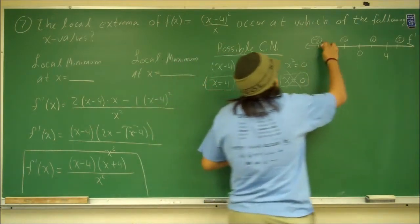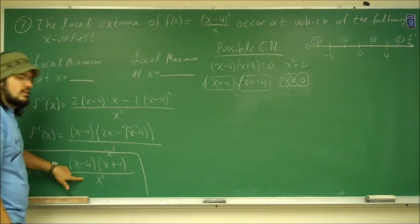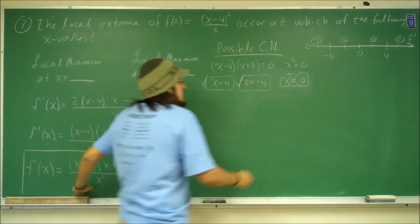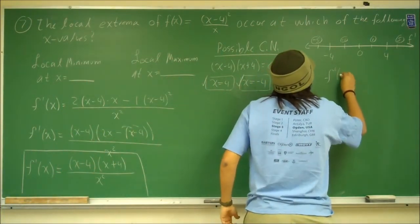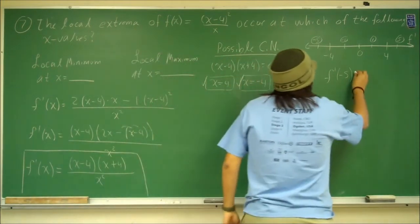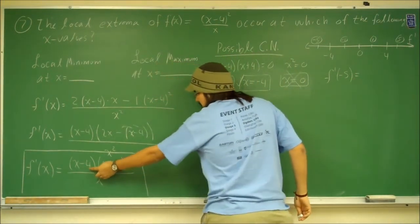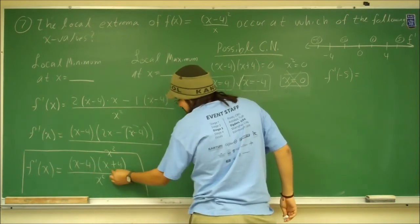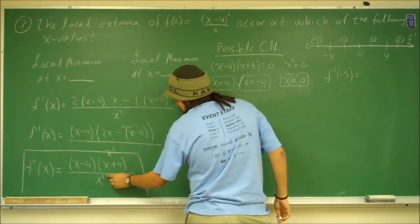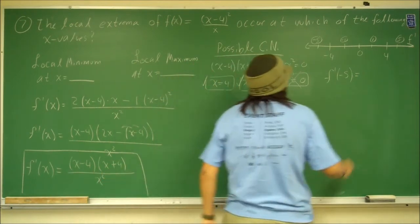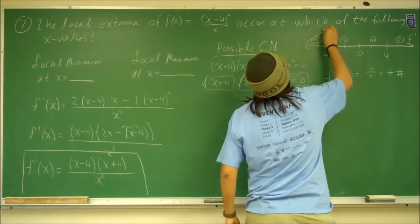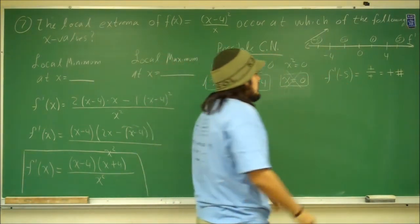The test points get plugged into the first derivative — not the original function. What we're looking for is just the sign, positive or minus. Plugging in minus 5: (−5 − 4) is negative, (−5 + 4) is negative, negative times negative is positive. And x squared in the denominator is always positive. So positive divided by positive is positive — meaning the function is increasing from negative infinity to negative 4.